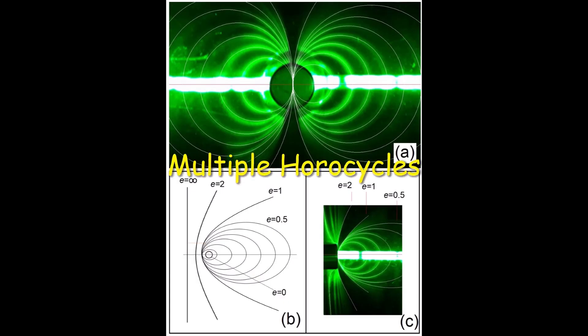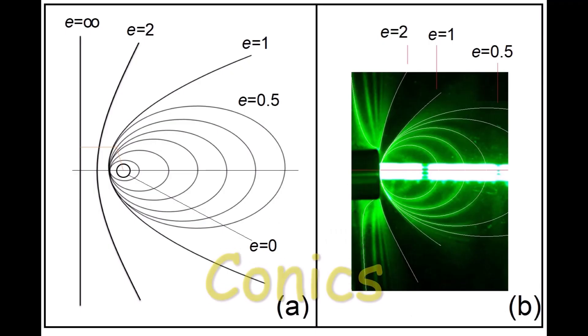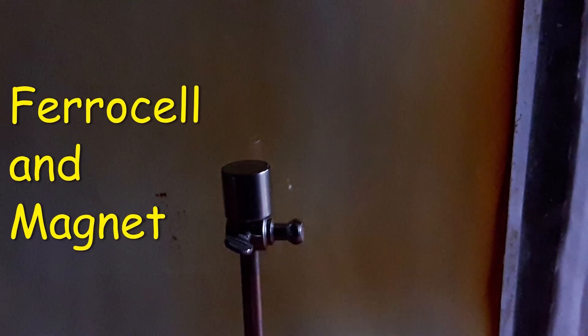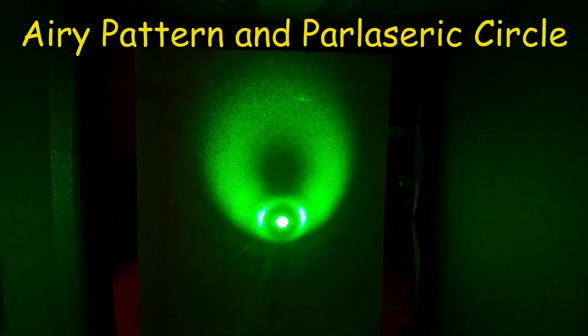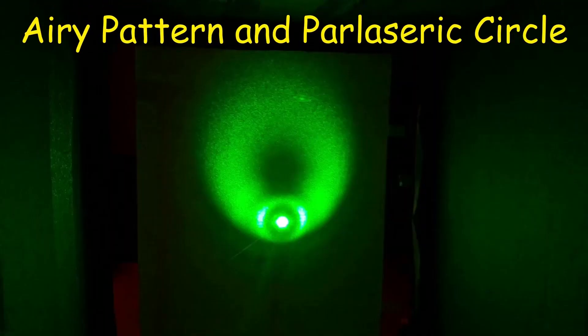With several light sources we can observe several horocycles. They are conical sections. Here the ferrocell and the magnet, a re-pattern and parlaseric circle.